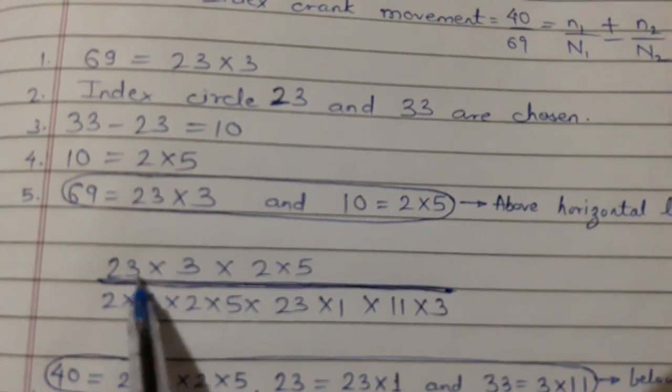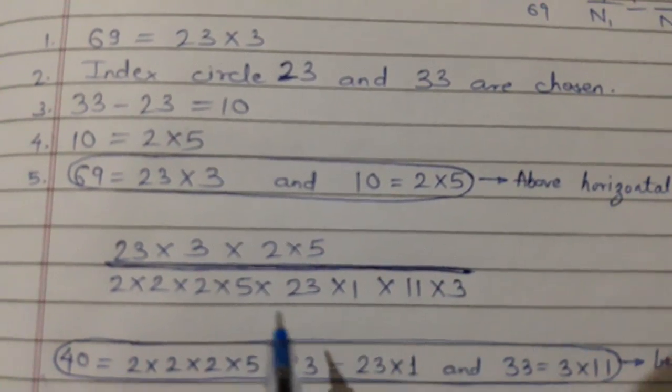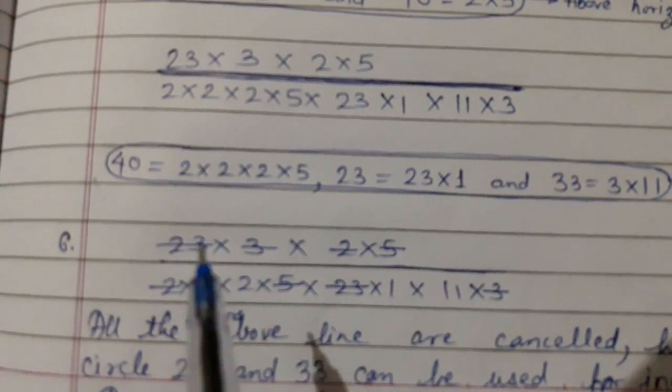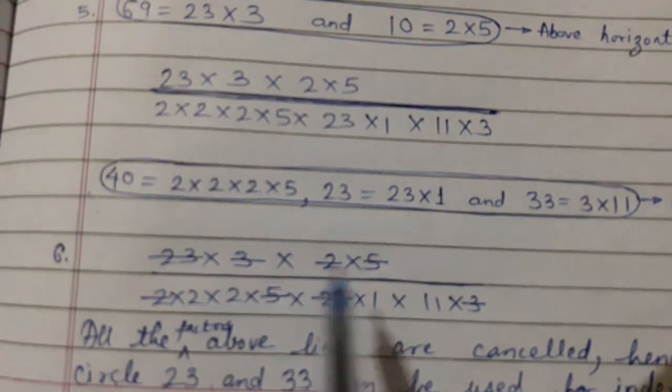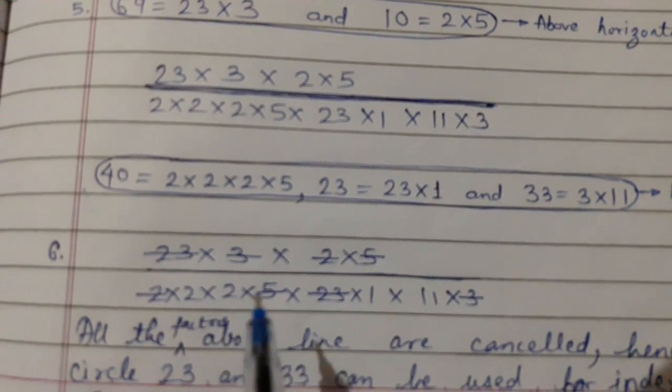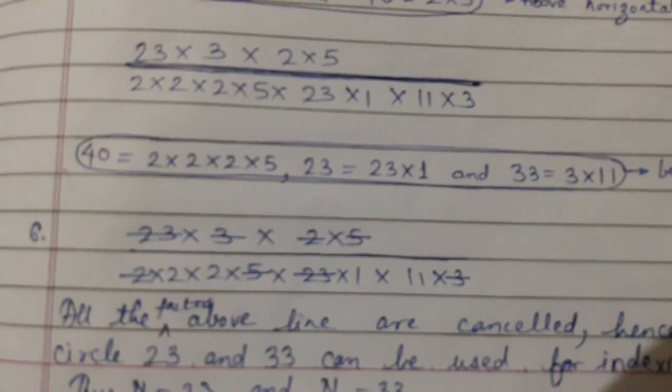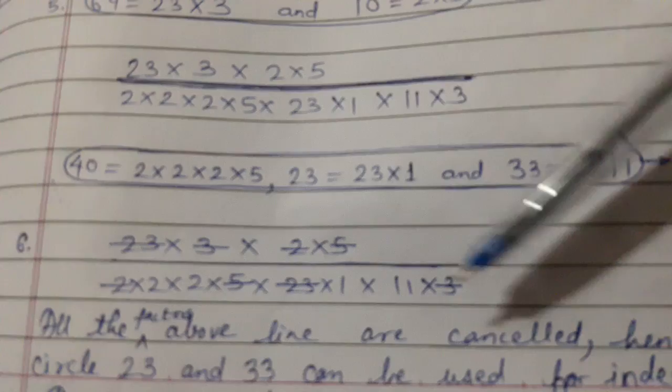So all these things will be put below horizontal line. If you see, we have put above horizontal line and below horizontal line. In the next step what we will do, we will cancel the common factors like 23 is canceled with this 23, 3 is canceled with this 3, 2 is canceled with this 2, 5 is canceled with this 5.